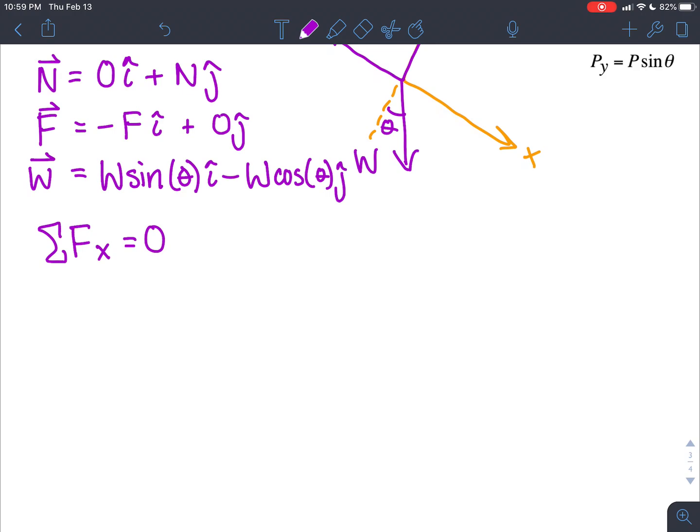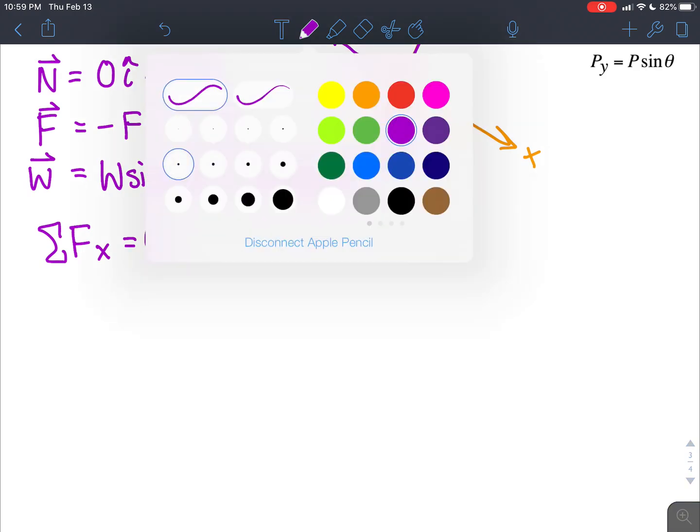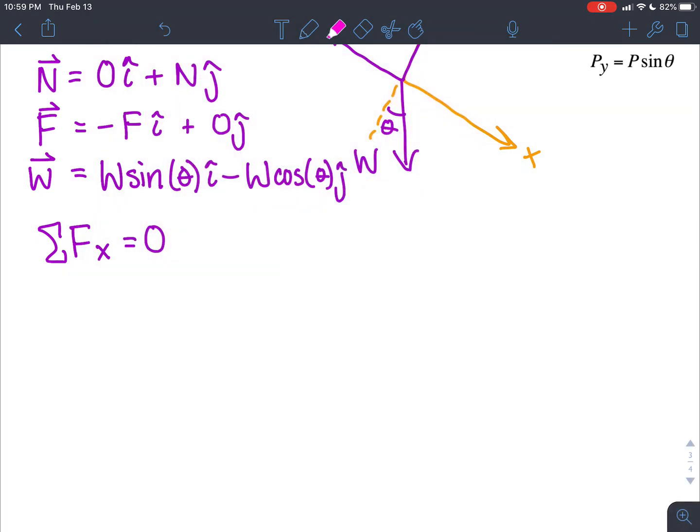And so our summation of forces in the x is going to be looking at our zero i hat, our negative F i hat, and our W sine theta i hat. So we write those out. We'll ignore the zero again. So we have negative F, and we can drop the i hats, because all of these are x components. So negative F plus W sine theta.